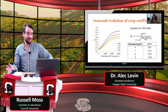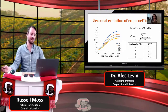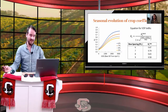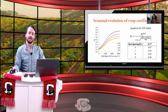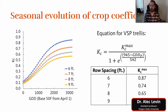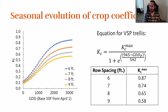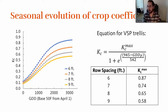This equation comes from Larry Williams' work. It was done on Chardonnay grown in Carneros, at the southern end of Napa Valley. He built this curve by actually measuring water withdrawals using intensive soil moisture measurements, and also measuring shaded area — which I'll get to — and they lined up pretty well. He drew the curve, published it, and said: here's a curve for VSP trellis.